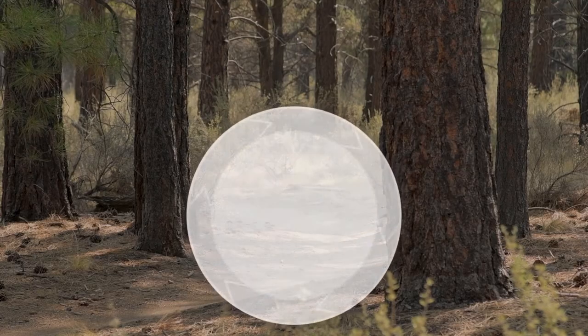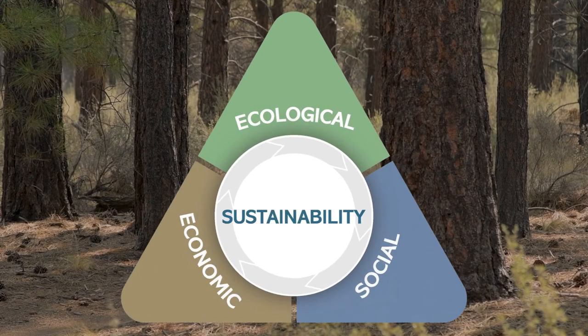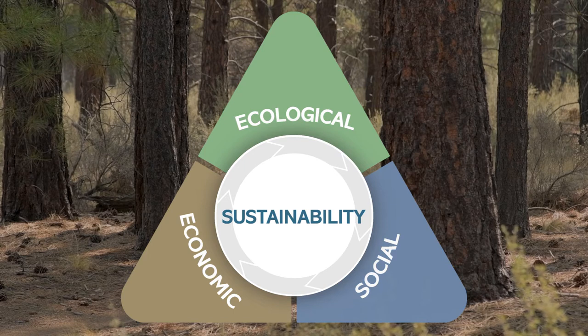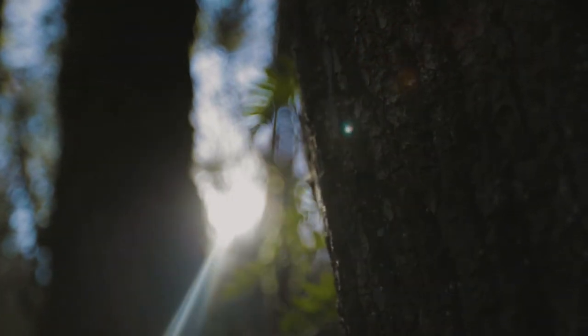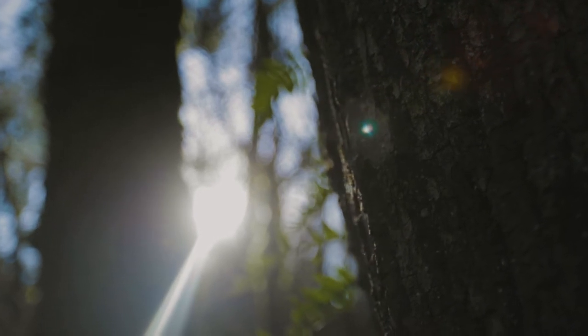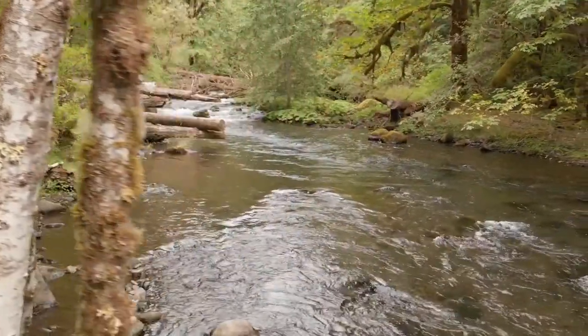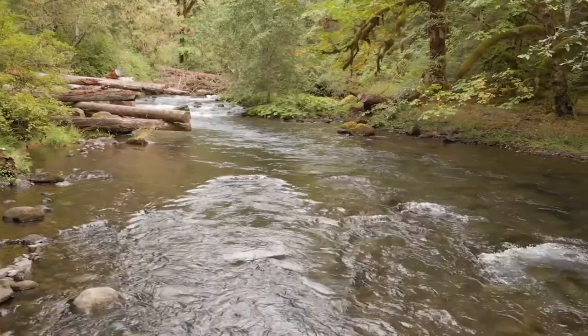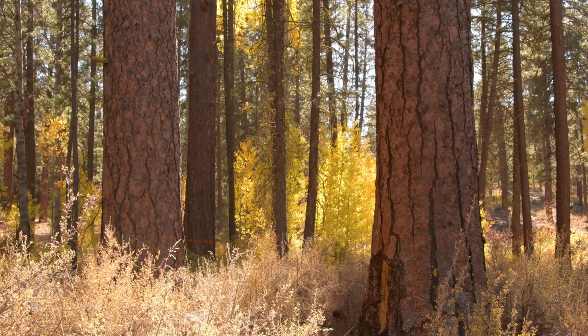Forest sustainability involves more than just a long-term supply of wood. The forest sustainability triangle shows this by including three types of benefits that must be considered for forest management to be truly sustainable. Ecological, social, and economic benefits are all important. Ecological benefits include maintenance of the basic ecological role forests play in cleaning air and water and providing a variety of wildlife habitat. Carbon sequestration and biodiversity are also important ecological benefits.